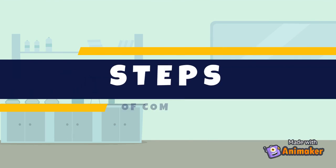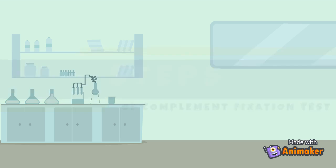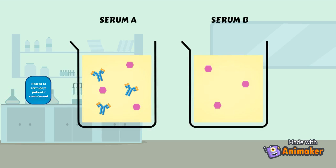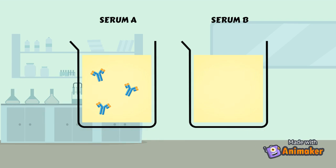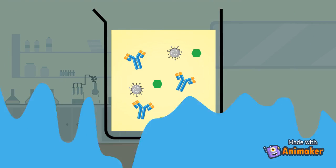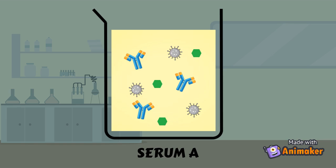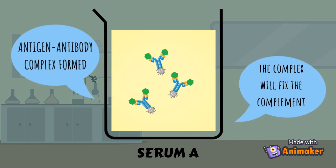Now let's move to the steps of the complement fixation test. First, the serum is heated to terminate the patient's complement in order to standardize both sera. Then, complement and antigen are added to both sera. In serum A, the antigen reacts with the antibody, forming an antigen-antibody complex. The complex will then fix onto the complement.